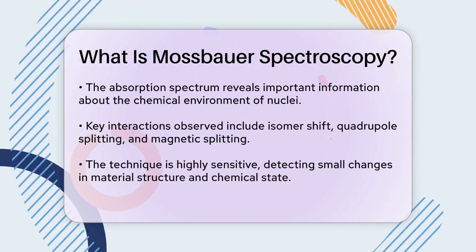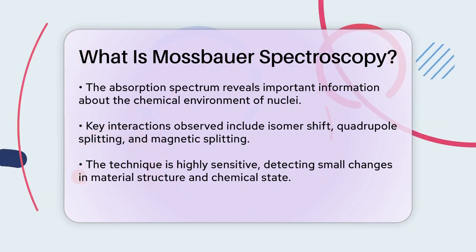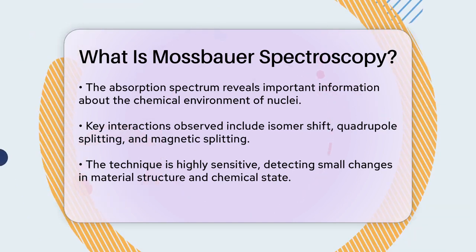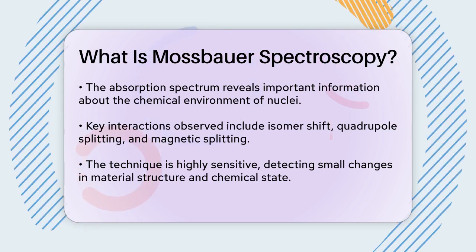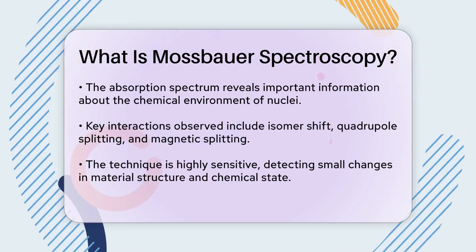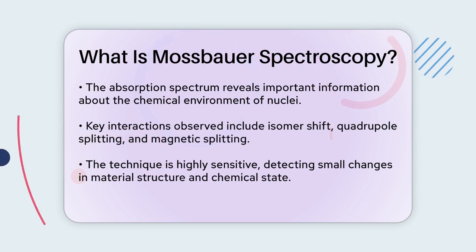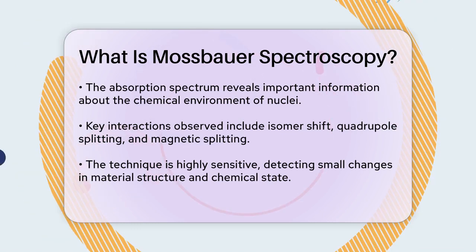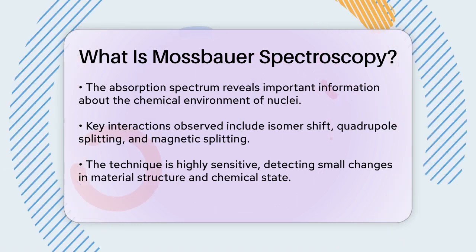This technique is incredibly sensitive and can detect very small changes in the material's structure and chemical state. For example, it can determine the oxidation state of iron in a sample, the effect of different ligands on an atom, and even the magnetic properties of the material.